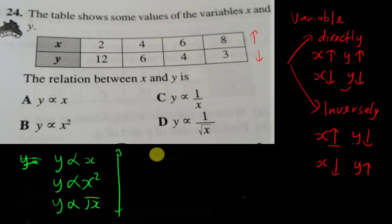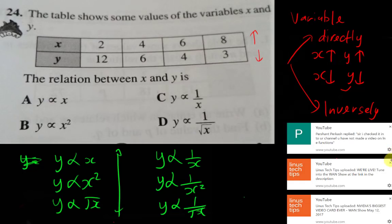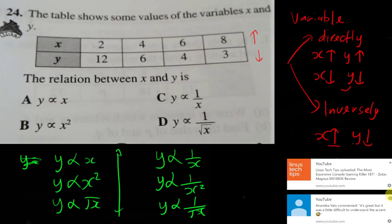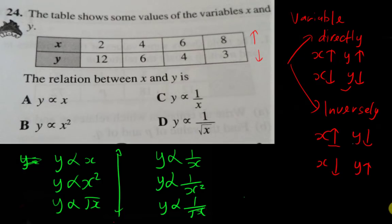When I say inversely, it must have the 1 over: y varies inversely to x, y varies inversely to x², or y varies inversely to √x. All this over here is inversely. I hope you can understand what is the meaning of directly and inversely.